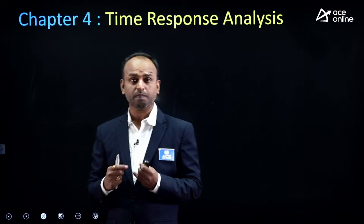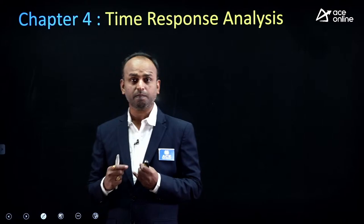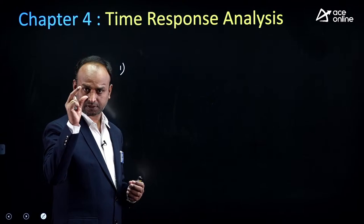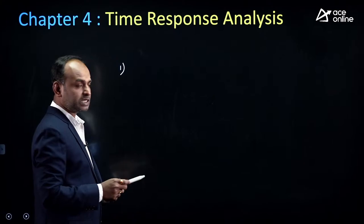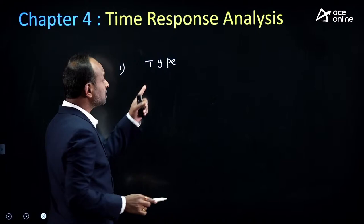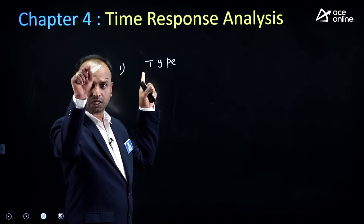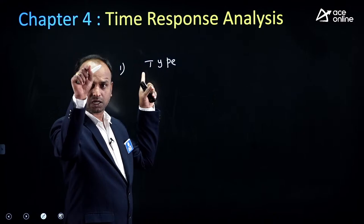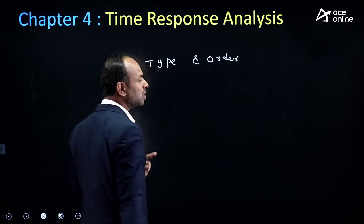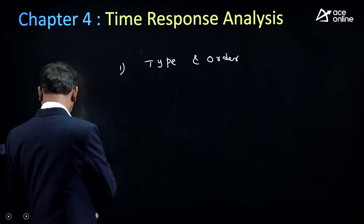Next — Time Response Analysis, a big chapter. Main topics: transient response and steady state response definitions, then type and order of system. Type means number of poles at the origin. Order means maximum power of s in numerator or denominator — whichever is higher.